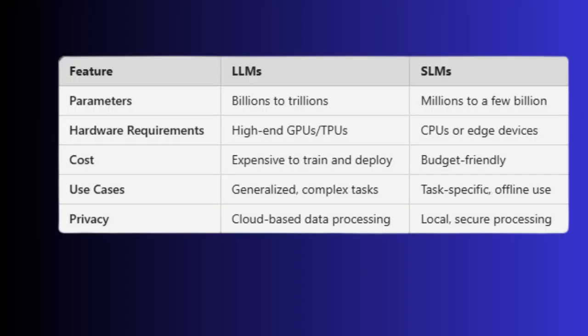When we compare LLMs to SLMs: in terms of parameters, LLMs use billions to trillions, while SLMs have millions to a few billion. For hardware requirements, LLMs need high-end GPUs or TPUs, but SLMs need only CPUs or edge devices. LLMs are expensive to train and deploy, but SLMs are budget-friendly. In terms of use cases, LLMs handle generalized or complex tasks, while SLMs are task-specific or suited for offline use. For privacy, LLMs use cloud-based data processing, whereas SLMs process data locally with secure processing.